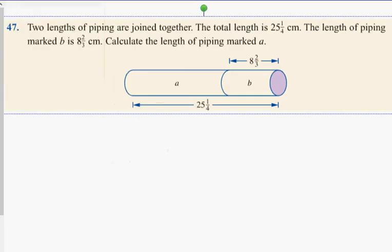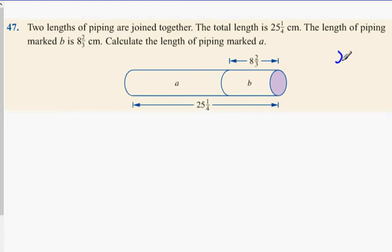Two lengths of piping are joined together. The total length is 25 and 1/4. The length of the piping marked B is 8 and 2/3. Find the piping marked A. Now, a rough estimate would be something like 25 minus 8. 25 minus 8 would be 17 then. Our answer has to be either above or below 17 then. So we know we're expecting an answer of 17, roughly. Now, to get the length of A, we get 25 and 1/4 and we take away 8 and 2/3.